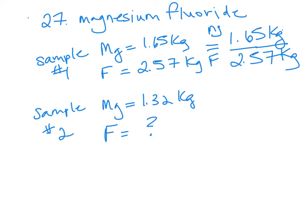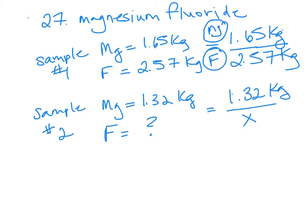The main thing is that when you create your second fraction, your second ratio, you want to make sure that you do the same setup. So if you put magnesium on the top, you want to make sure that it goes on the top for the second one. So that's 1.32 kilograms, and our fluorine's on the bottom, so it's our unknown — I'm just going to leave that as X.